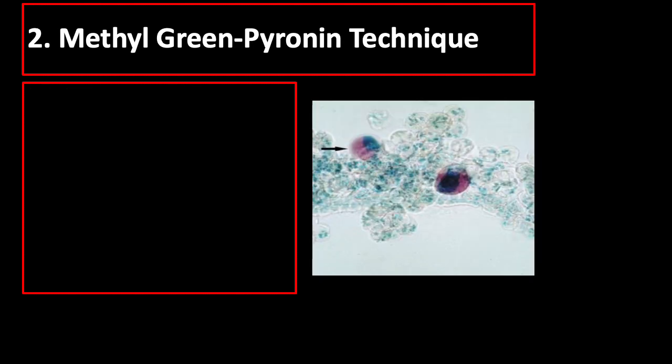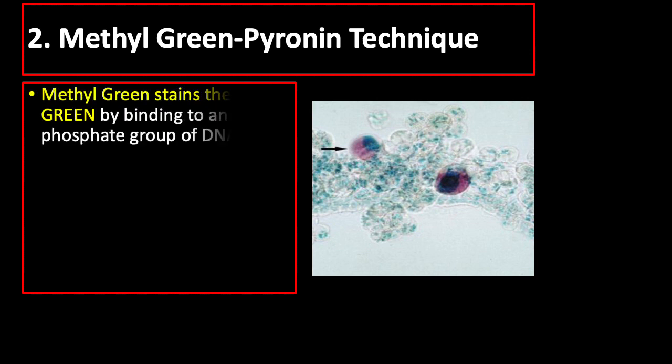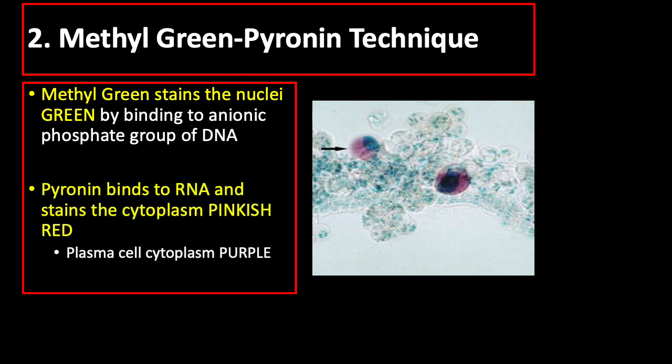The methyl green pyronin technique uses basic dyes to produce differential staining reaction for DNA and RNA. Methyl green stains the nuclei by binding preferentially and specifically to DNA, coloring it green due to binding of the anionic phosphate group of the DNA to the methyl green, while pyronin binds to RNA and stains the cytoplasm a pinkish-red color.